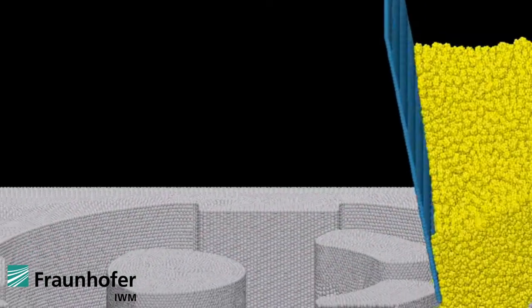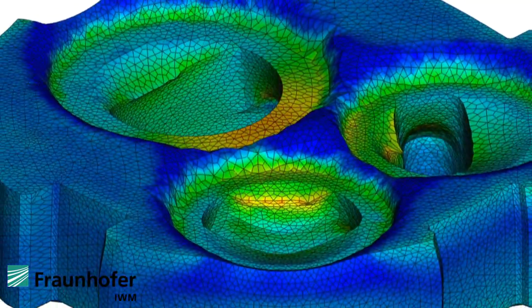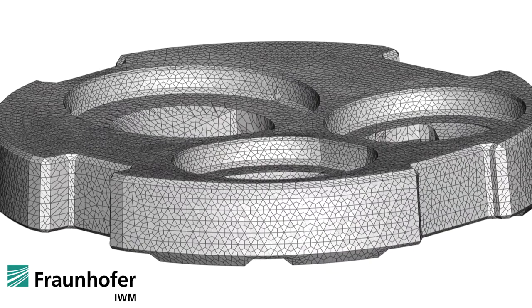Starting with the raw material, a powder, scientists at the IWM simulate the die filling, compaction, and sintering steps in the powder technology process chain.